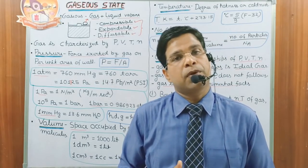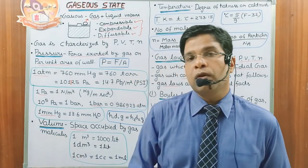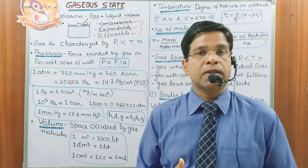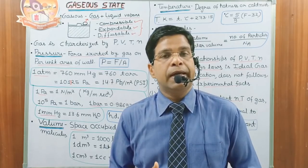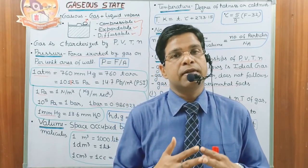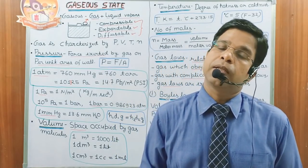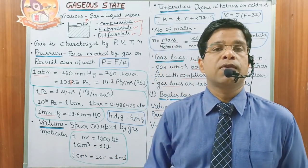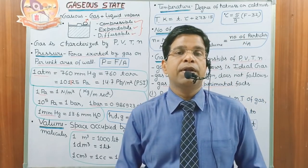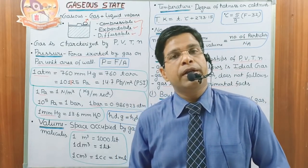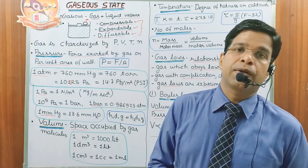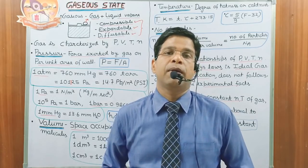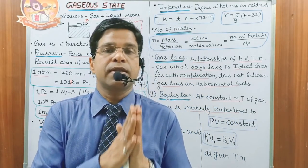The next property is volume. Volume is the space occupied by the gas molecules in any container. The units are: 1 m³ is equal to 1000 liters, 1 dm³ is equal to 1 liter, and 1 cm³ (or 1 cc) is equal to 1 mL.